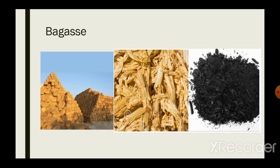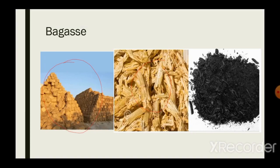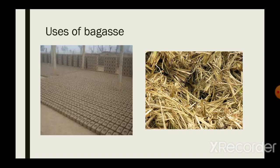Bagasse is the pulp obtained from sugarcane once the liquid is squeezed out. This pulp is thatched in bundles, one over the other. It can be used by paper industries for further usage, or it can be burned and used in concrete purposes. The fibers of bagasse give height and shear strength; in powder form they provide amorphous silica, tensile strength, and modulus of elasticity.